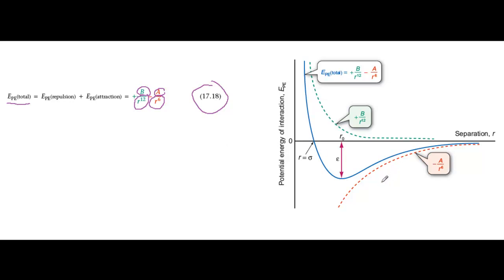Now have a look at the graph, which is figure 17.14. The red dotted line shows how the potential energy of attraction changes with separation, and the green dotted line shows how the potential energy of repulsion changes with separation. The blue line is the total potential energy made by adding together the attraction and repulsion energies.